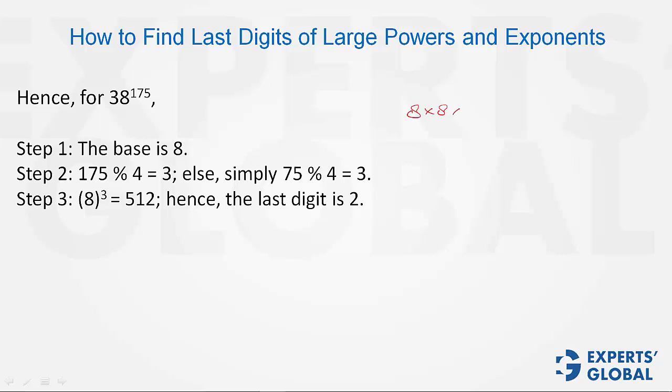You don't even have to find 8 cubed. You can do 8 times 8 equals 64, and 4 times 8 equals 32. So the last digit is 2.